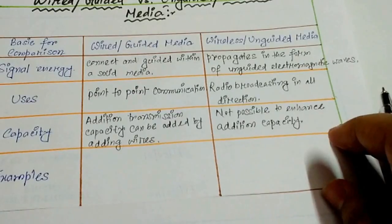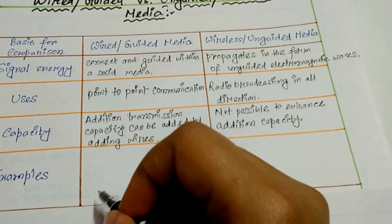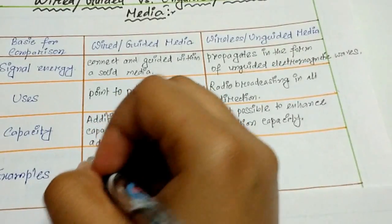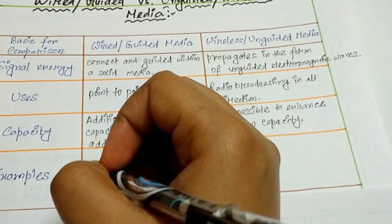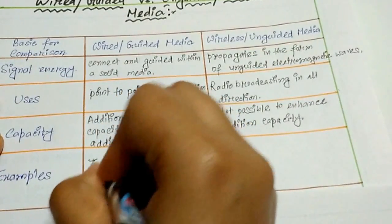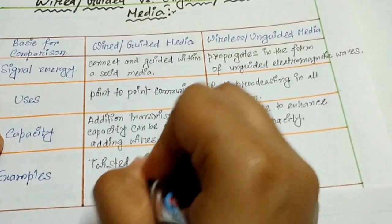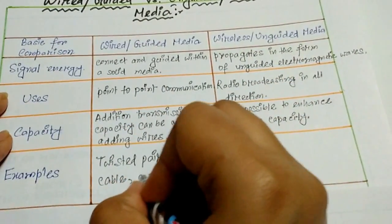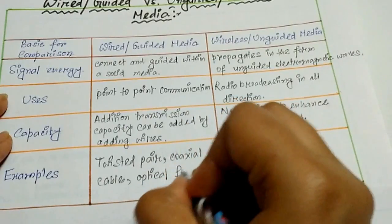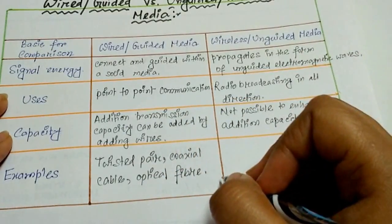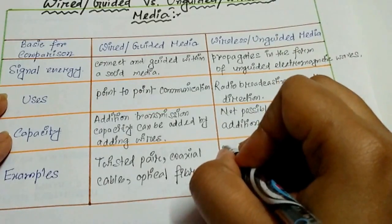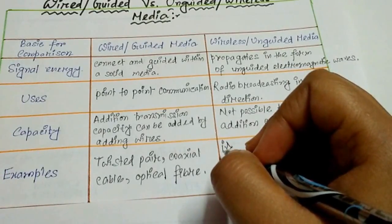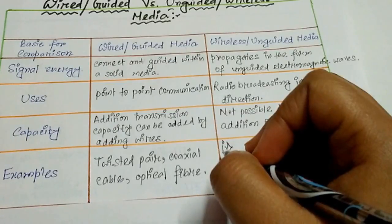Now the fourth point is examples. The examples of wired media are twisted pair, coaxial cable, and optical fiber. Satellite communication, infrared, and microwave communications are the examples of wireless media.